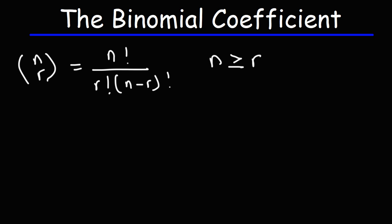So now let's work on some examples. Let's say we have this expression, 8 above 3. Go ahead and evaluate that. Using the formula we can see that n is 8 and r is 3, and then we have n minus r, so that's 8 minus 3.